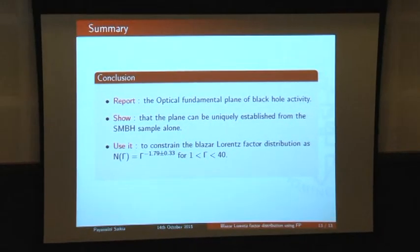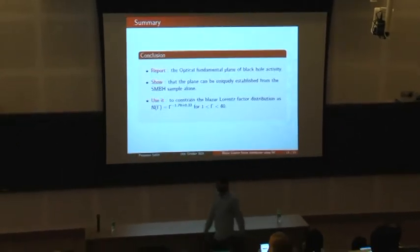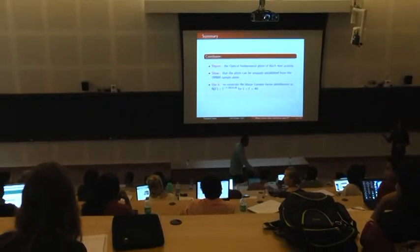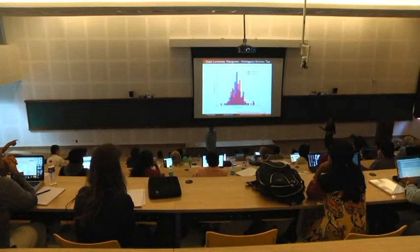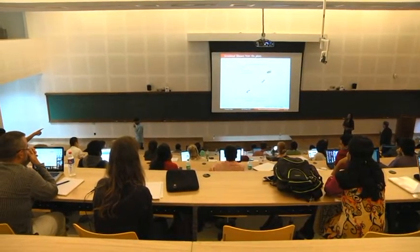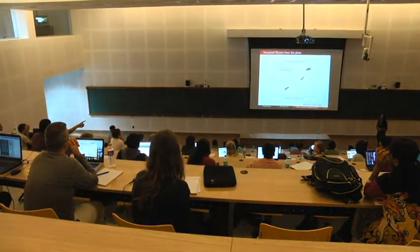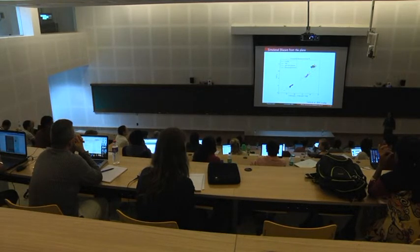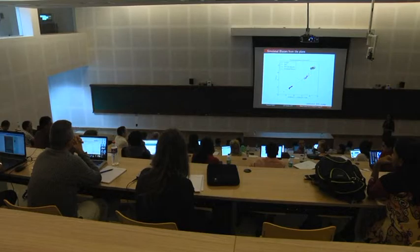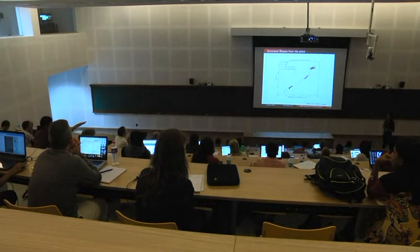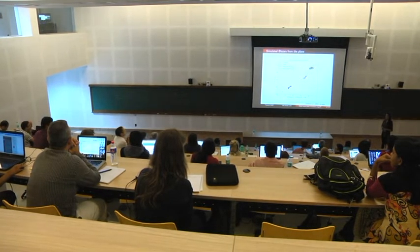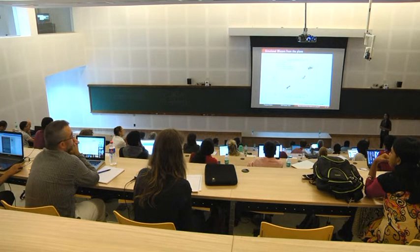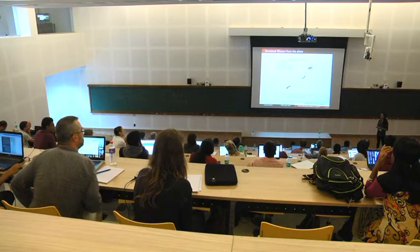Question from the audience: Can you show the fundamental plane slide? For the blazars, you say the discrepancy is due to beaming — why do you need both gamma and theta separately? When beaming occurs, what enters the observed luminosity is the Doppler factor delta. Instead of varying gamma and theta separately, you could just use delta and try to bring sources back to the plane, then see what values of theta are possible. Is that right?